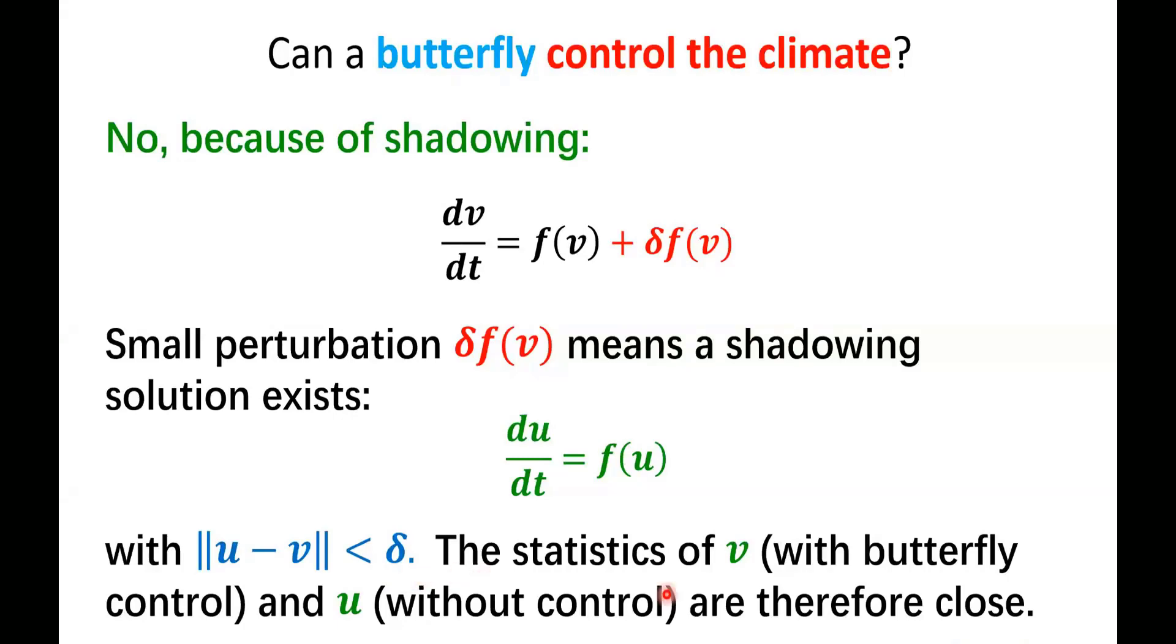And therefore, the statistics of the controlled solution v would be not much different from the statistics of the uncontrolled solution u. So yes, a butterfly giving a tiny perturbation can make a difference in the statistics, but the difference would be tiny if the control is tiny. That's the logical argument from the point of view of shadowing.